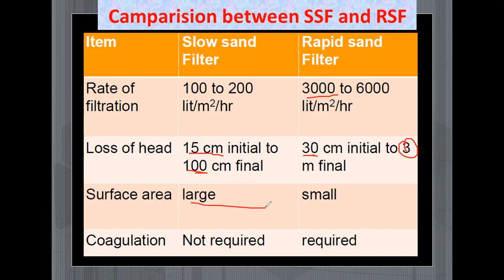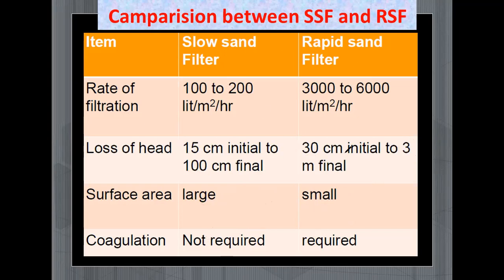Obviously a large surface area is required for the slow sand filter, while a very small area is required for the rapid sand filter, which is constructed under a roof. Regarding coagulation, for the slow sand filter it is not required, but for the rapid sand filter it is required because the efficiency of filtration is more in the slow sand filter as compared to the rapid sand filter.